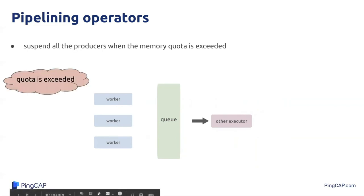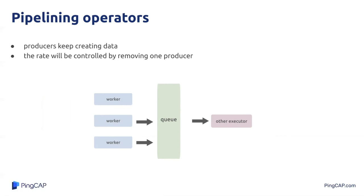To solve this problem, we need to control the rate of the producers. Each time the memory quota is exceeded, we can suspend all the producers until the buffered data in the queue has been consumed. Even if all data is consumed, producers keep creating data. In this situation, we could control the producers' rate of creating data by removing one producer to prevent the quota from being exceeded again. From suspending all producers to removing a producer, this process continues until there is only one producer left.